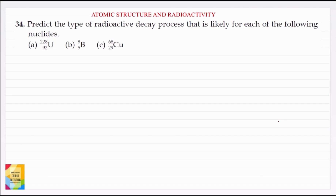Question 34: Predict the type of radioactive decay process that is likely for each of the following nuclides. Part A: Uranium with mass number 228 and atomic number 92.